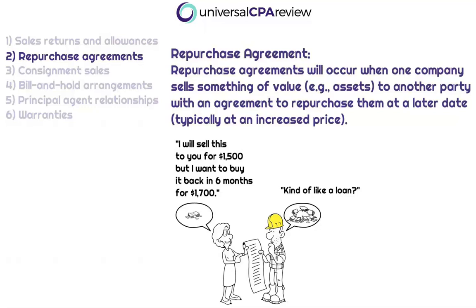Essentially this is a loan, but what's happening here is a company sells something of value — it could be fixed assets, could be their inventory — and they want the right to purchase it back at what will generally be a higher price. This is not much different than a loan while pledging these assets as collateral, and that difference in the higher repurchase price would essentially be interest from that loan.